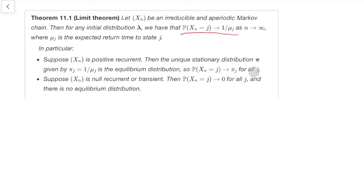On the other hand, if you're null recurrent or transient, then we know that mu_j equals infinity. And so 1 over mu_j equals 0. And so we have this, that as time goes on, you're less and less likely to be in that state, perhaps because you leave that area of the Markov chain, or perhaps because you get spread out over infinitely many states.